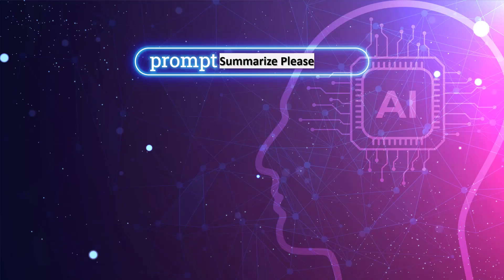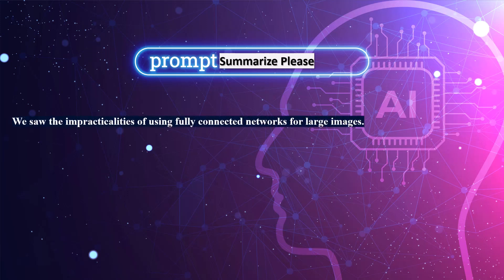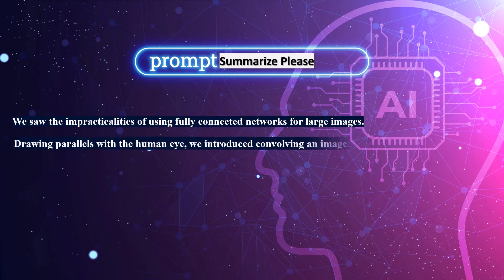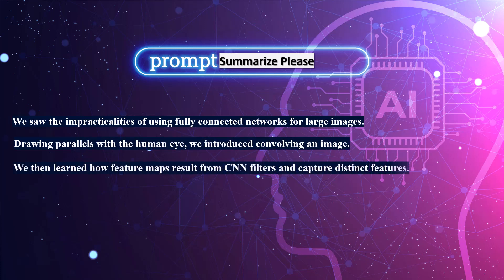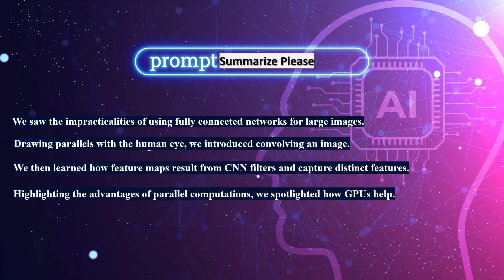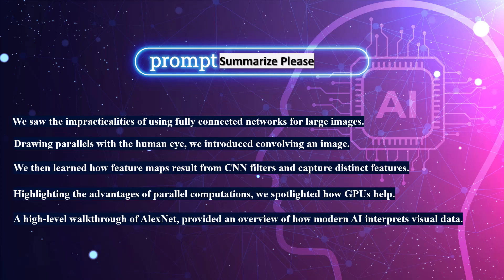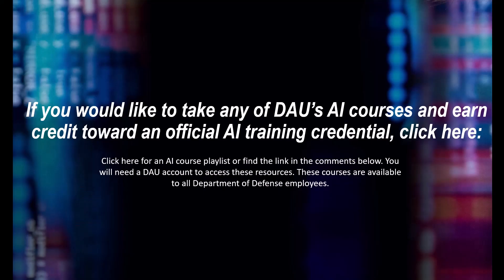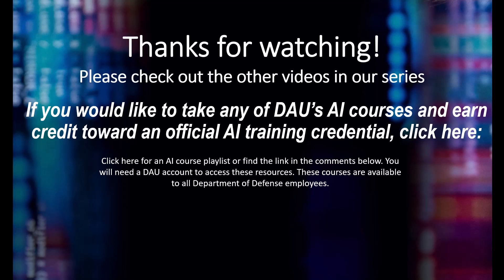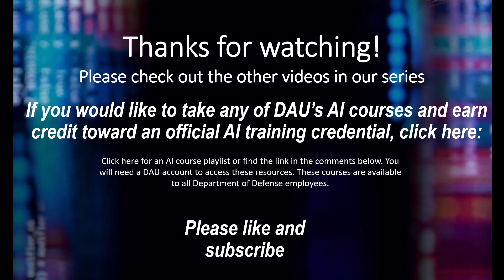To summarize: we saw the impracticalities of using fully connected networks for large images. Drawing parallels with the human eye, we introduced convolving an image. We then learned how feature maps result from CNN filters and capture distinct features. Highlighting the advantages of parallel computations, we spotlighted how GPUs help. A high-level walkthrough of AlexNet provided an overview of how modern AI interprets visual data. If you'd like to take any of DAU's AI courses and count credit toward an official AI training credential, please click the link below. Thanks for watching — please check out the other videos in our series, and if you got anything out of this, please leave a like and subscribe.